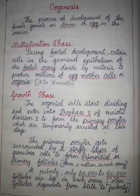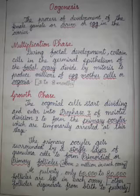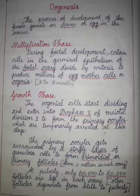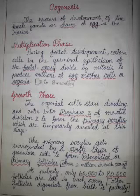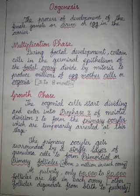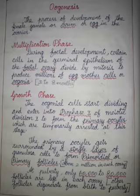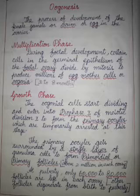When a fetus develops in the mother's womb, certain cells of the germinal epithelium present in the fetal ovary divide by mitosis, producing millions of egg mother cells called oogonia. This takes place between 3 to 8 months of fetal development. These oogonia are diploid cells.